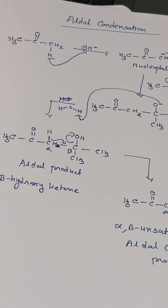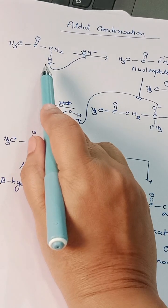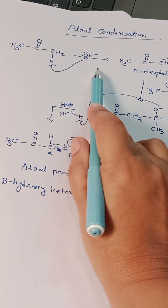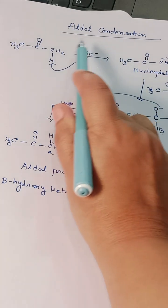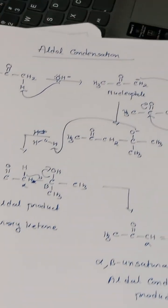Here I am going to explain aldol condensation reaction of acetone. Acetone is a carbonyl compound; it contains alpha hydrogen. In presence of OH-, it undergoes aldol condensation reaction. Here we can use sodium hydroxide or potassium hydroxide.